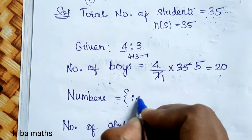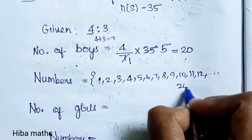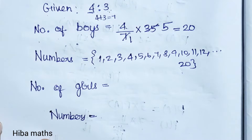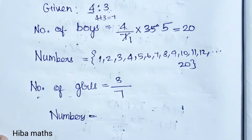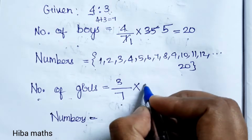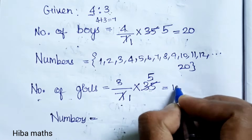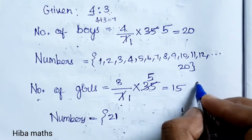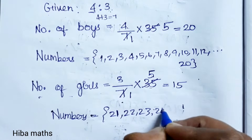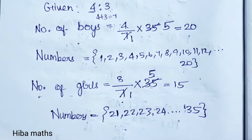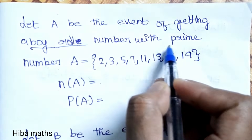So boys are numbered 1, 2, 3, 4, 5, 6, 7, 8, 9, 10, 11, 12 up to 20 — everyone from 1 to 20 is a boy. Number of girls: ratio is 3 by total 7, multiplied by total students 35. So 3 times 5 is 15 girls, numbered from 21 to 35.